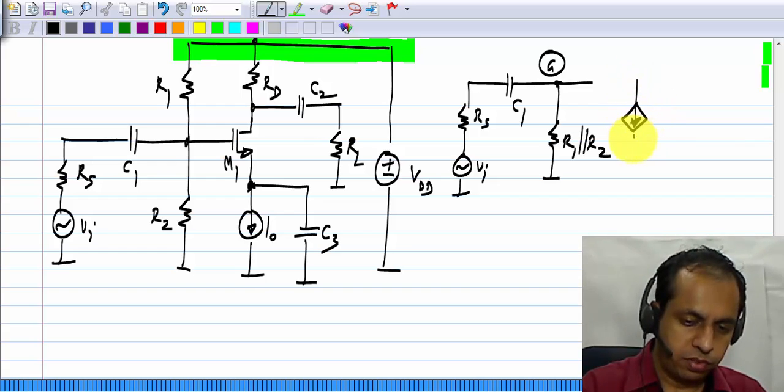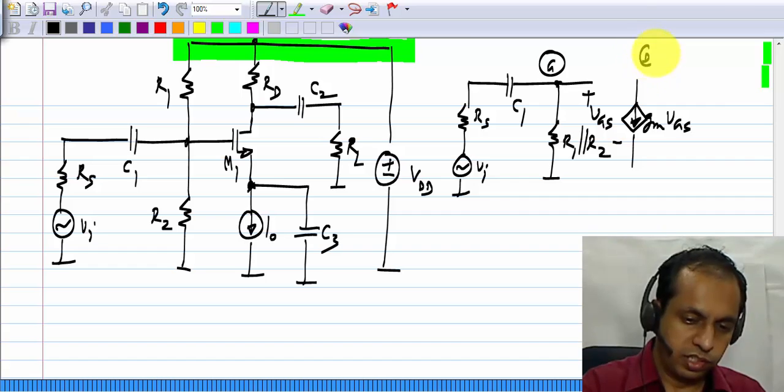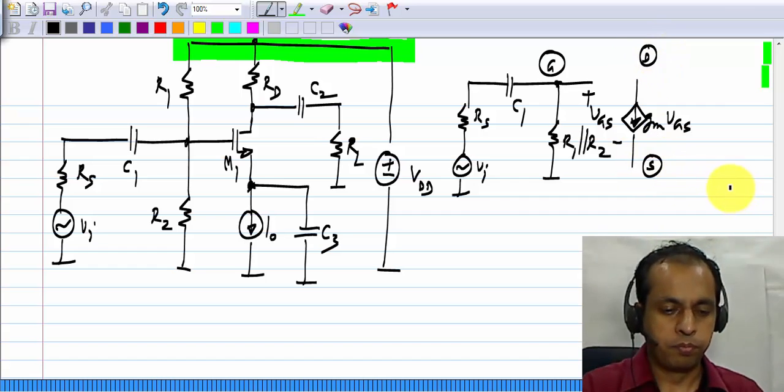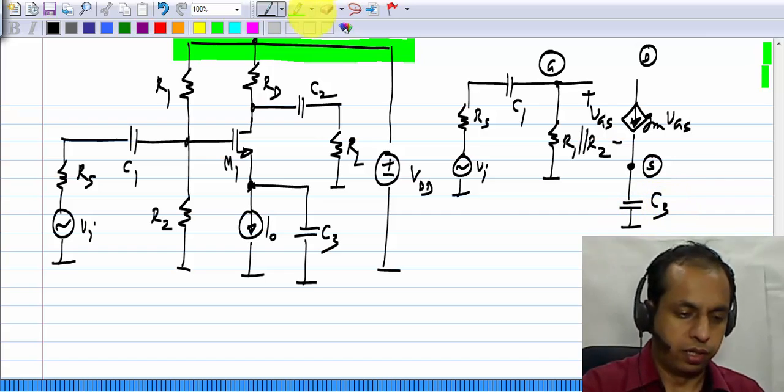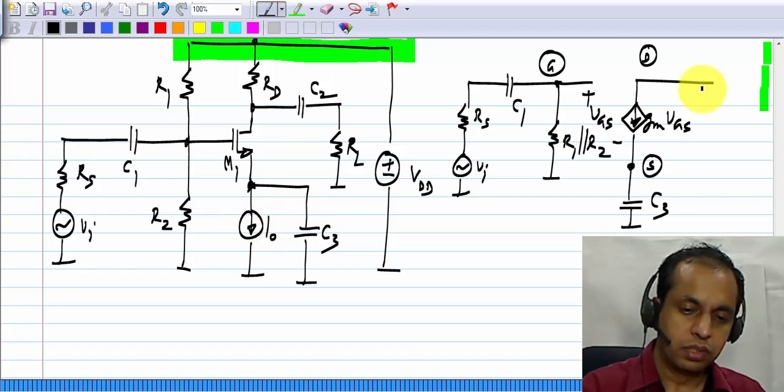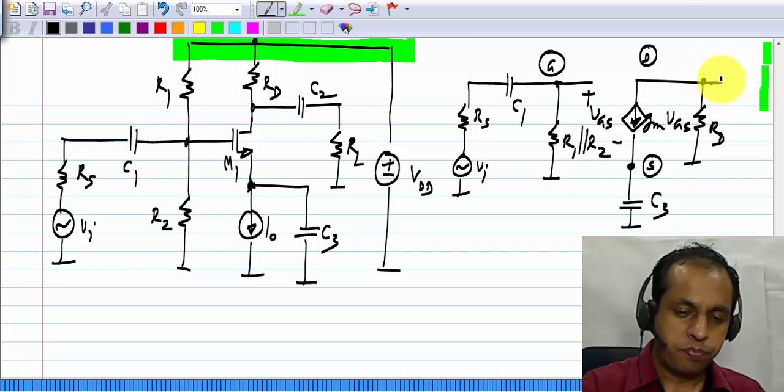Then, we have our controlled source of the MOS transistor. This is VGS and that is gmVGS. This is the drain. This is the source terminal. And from the source terminal to ground, we have the capacitor C3. This current source is an open circuit, because it is a fixed current source. And from the drain into ground, we have Rd from the capacitor C2 and the load resistor RL.